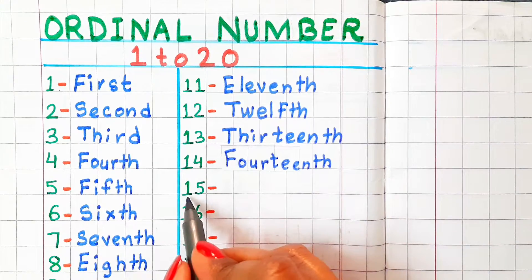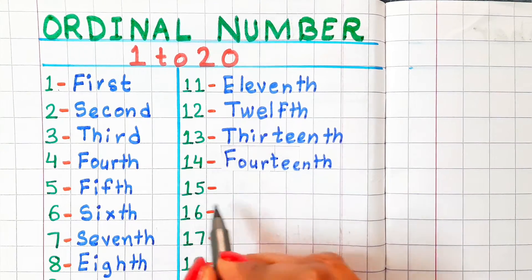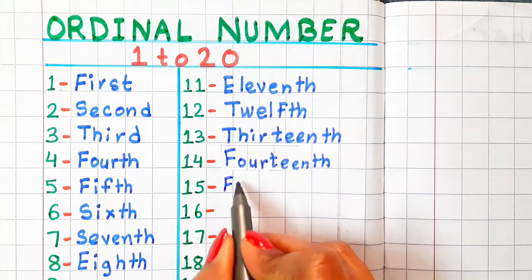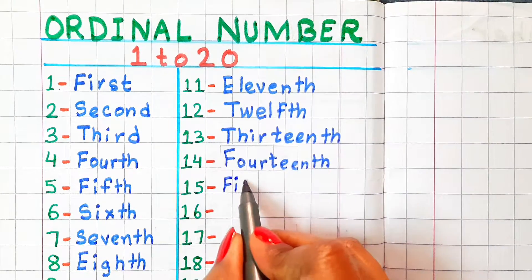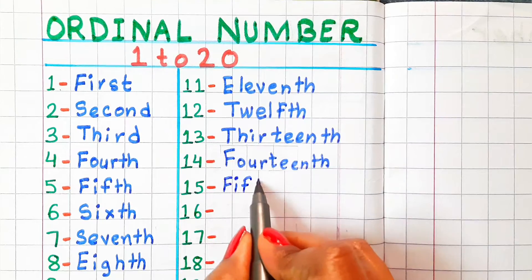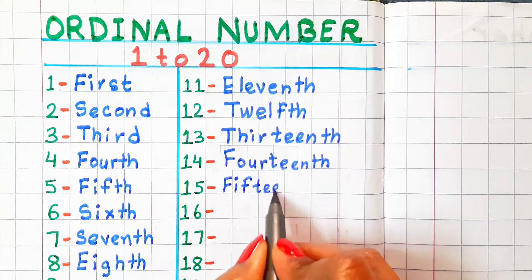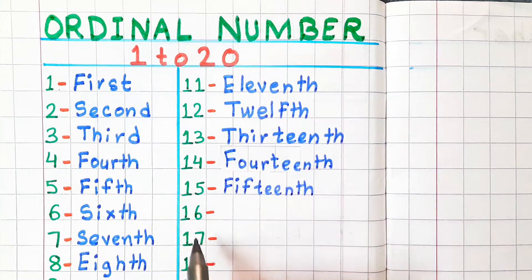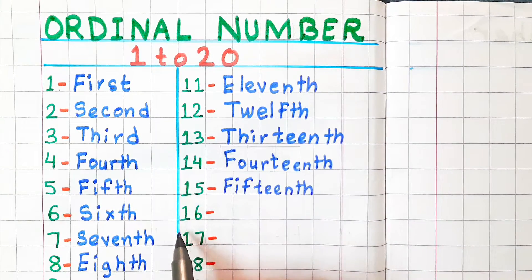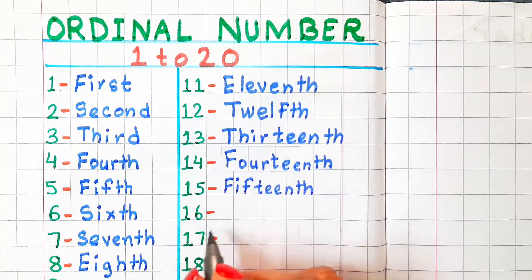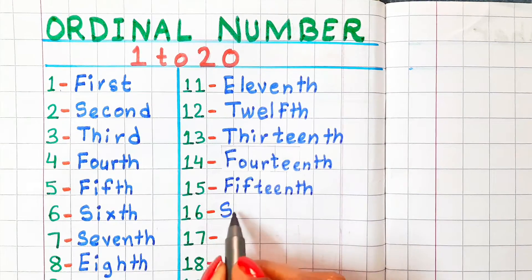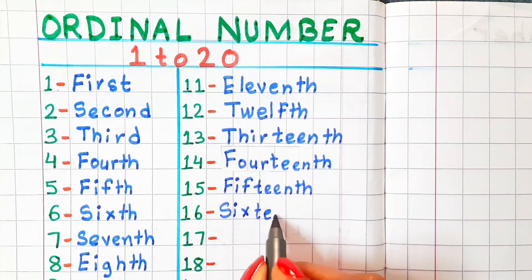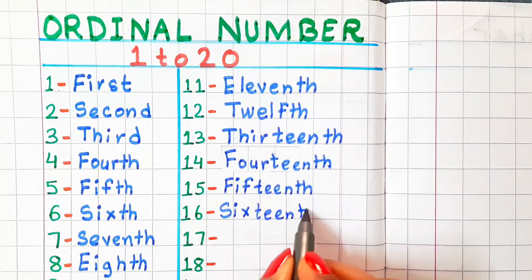15 — in ordinal number, it is called fifteenth. Spelling is F-I-F-T-E-E-N-T-H. 16 — in ordinal number, it is called sixteenth. Spelling is S-I-X-T-E-E-N-T-H.